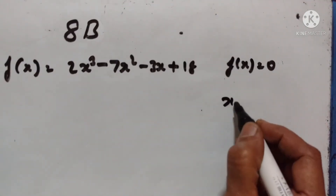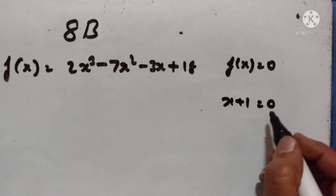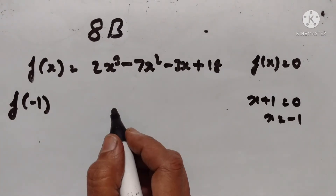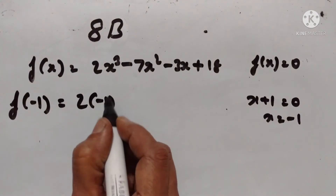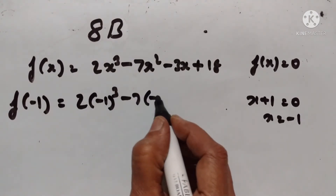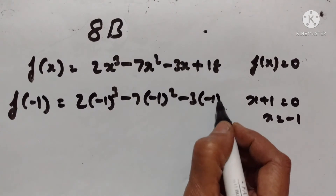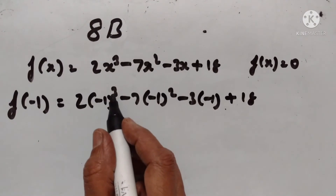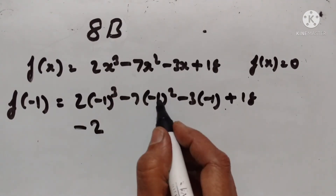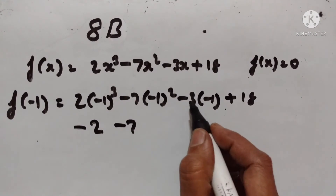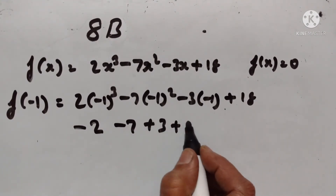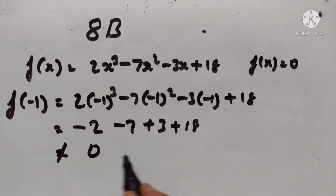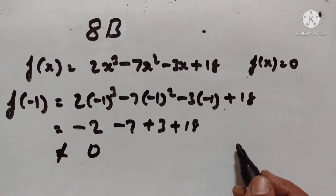Let us see whether x + 1 is a factor of this expression. If f(-1) = 0, then x + 1 is a factor. f(-1) = 2(-1)³ - 7(-1)² - 3(-1) + 18. This is not equal to 0. So x + 1 is not a factor of this expression.